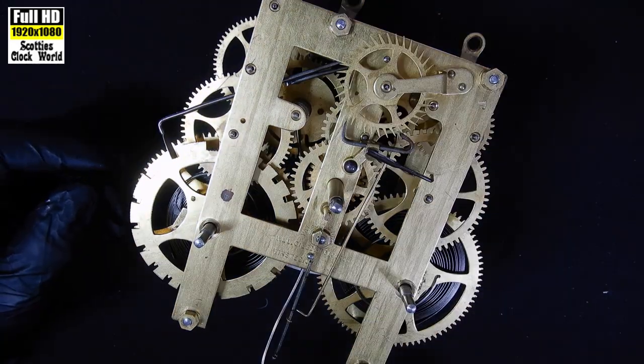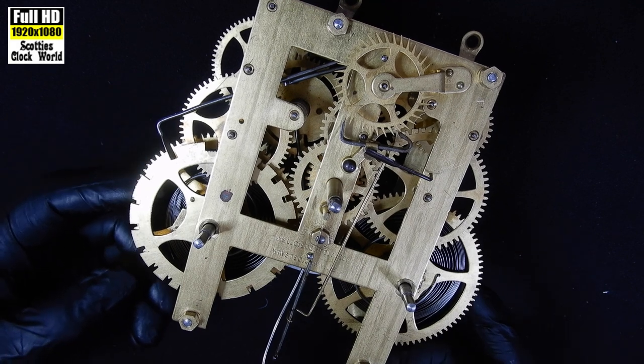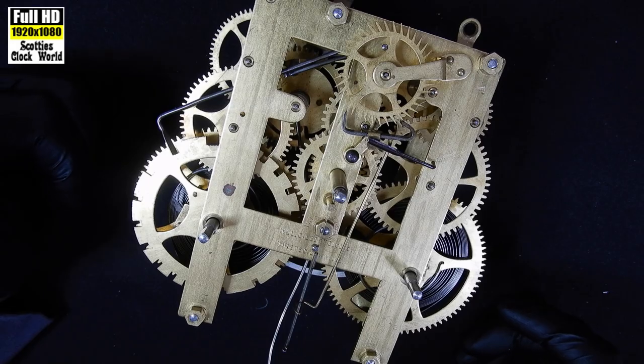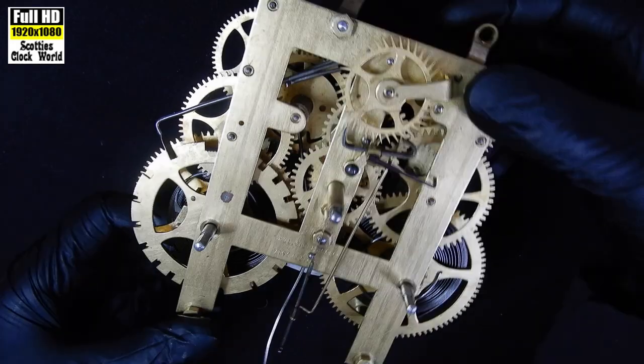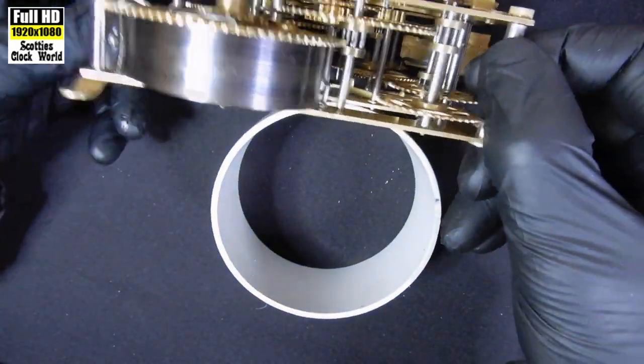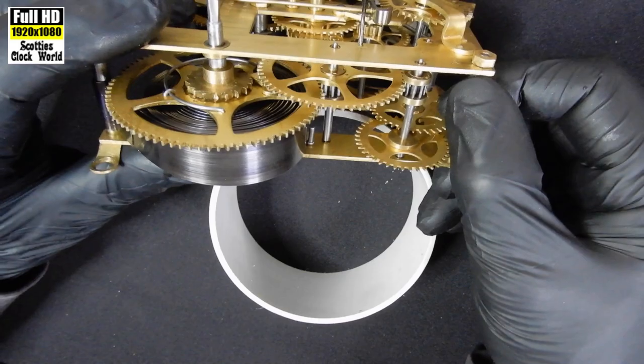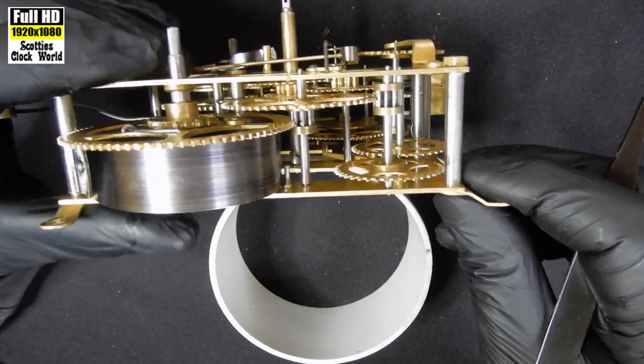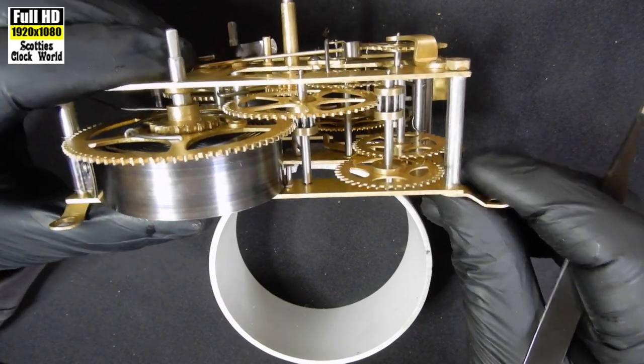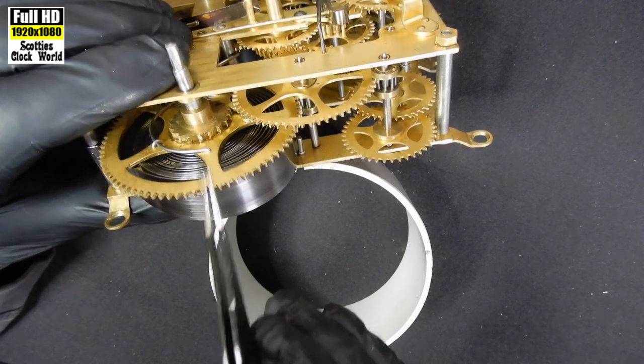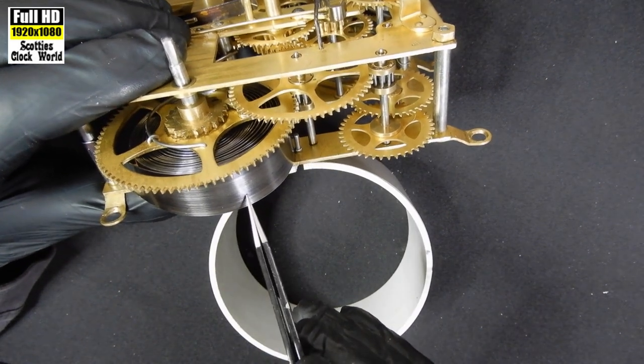We now have to contain the power in the springs, which we do with a let down tool and a set of mainspring clamps. However, before we do that, because you're new at this, it's very good to take some photos to see where the actual wheels are positioned within the plates to make it easier for you to put them back on in the correct position. However, there's another way that you can do that that is just as good.